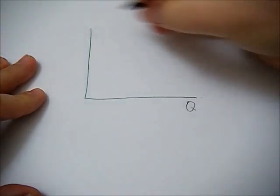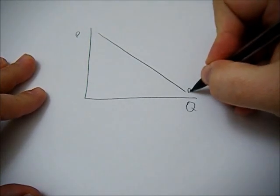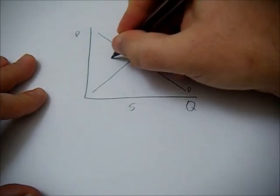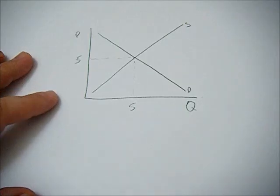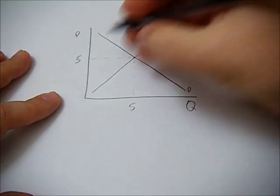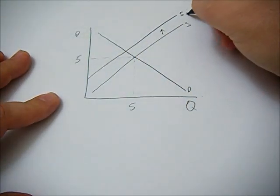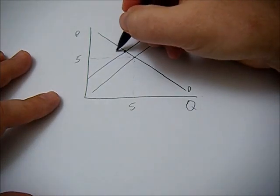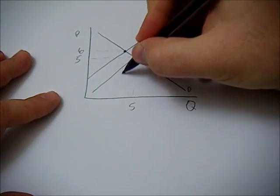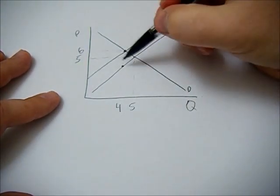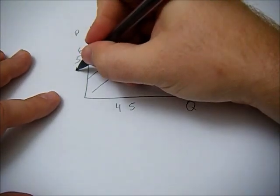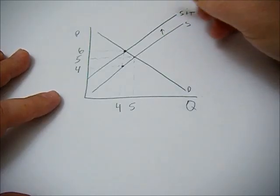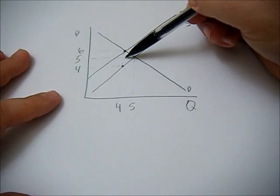Let's go through an example. We begin with the economy in equilibrium — let's say the initial equilibrium is at a price of five and a quantity of five. The government then institutes a supply-side tax, shifting supply to supply plus t. The new equilibrium results in a consumer price of six, a quantity of four, and a supplier price of four. The tax is two, the supply curve shifted up by two, with suppliers and consumers each bearing half the tax.